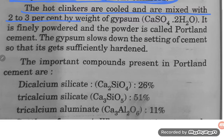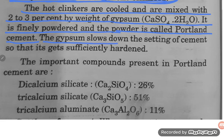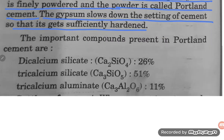The cooled clinkers are mixed with 2 to 3 percent by weight of gypsum (calcium sulfate dihydrate), finely powdered. This powder is called Portland cement. Gypsum slows down the setting of cement so that it gets sufficiently hardened.